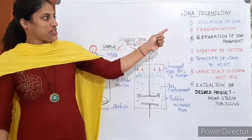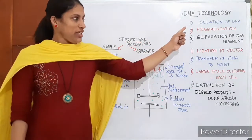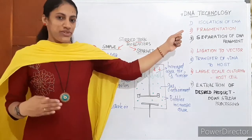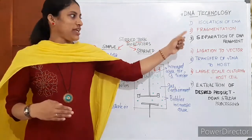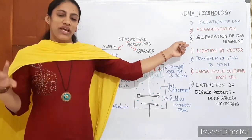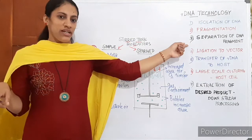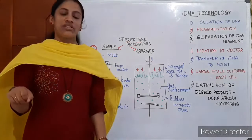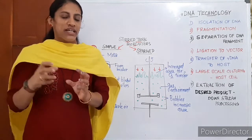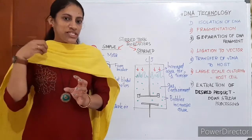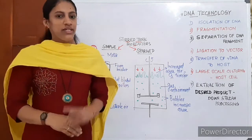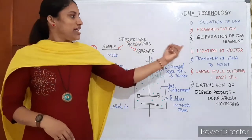The first step: isolation of DNA. The second: fragmentation of the isolated DNA. Then the third step: separation of these fragments in gel electrophoresis. And the fourth step: ligation of the desired DNA — isolation of the desired DNA and its ligation to the vector to produce R-DNA.